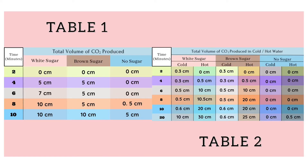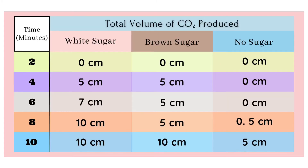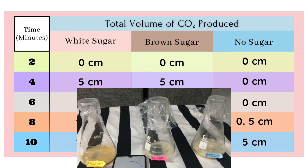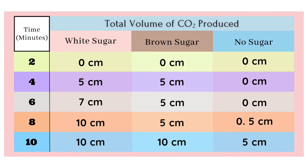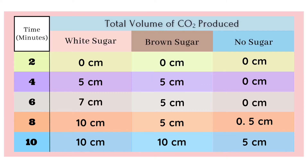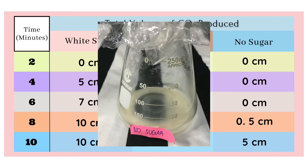You can see in Table 1 different measurements and the rising of yeast. At 2 minutes, nothing happens. After 4 minutes, the bubbles in the white and brown sugar glasses start rising, with a measurement of 5 centimeters. But in the no sugar glass, still nothing happened. At 6 minutes, 2 cm was added to the measurement in white sugar. In brown sugar, still the same measurement as 2 minutes ago, while the no sugar glass still hasn't produced bubbles.